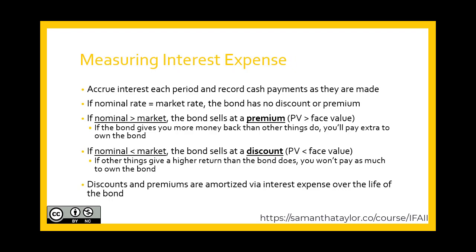We are going to accrue interest each period and record the cash payments as they are made. If the nominal rate of the bond equals the market rate, then the bond has no discount or premium. However, if there exists a timing difference which results in a difference between the bond's nominal rate — the rate at which the bond was written — and the market rate — the rate when the bond went to market and was purchased — and the nominal rate is higher than the market rate, then the bond sells at a premium.